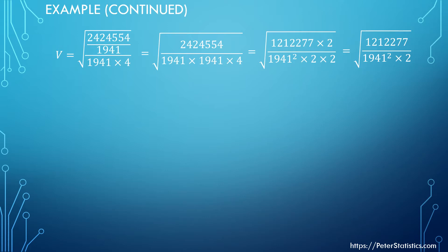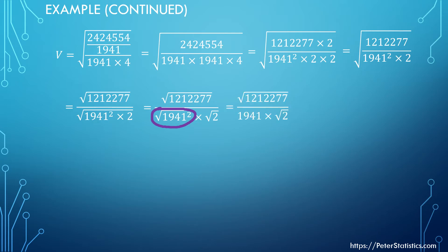The next thing is that if you have a square root, you can take the square root of the numerator and denominator separately. Because these are square roots, we can expand these into two separate square roots. And because 1941 squared and then the square root will simply be 1941, we're left with 1941 here.